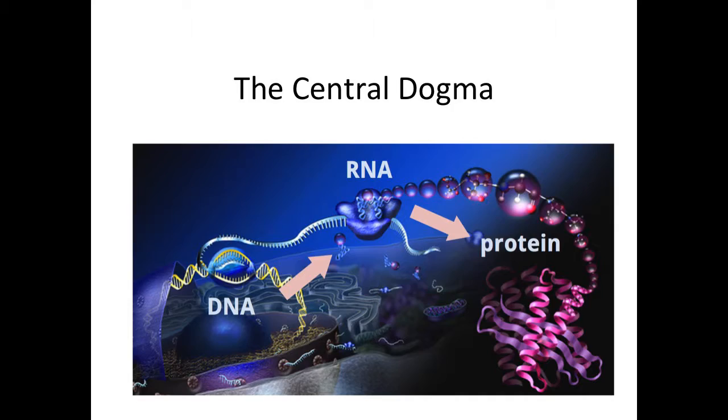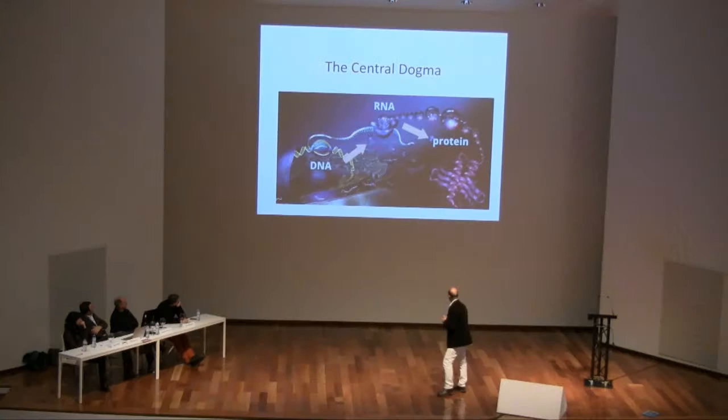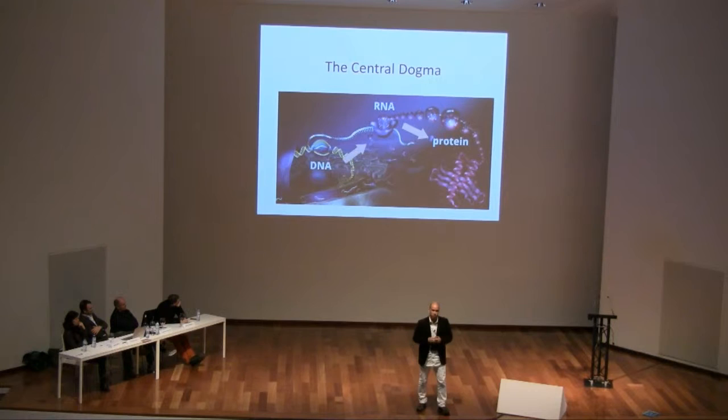The reason it's called a dogma is because it was proposed where there was very little evidence for it, and that may or may not have changed, as we'll see. The model is about 50 years old, and it's pretty useful, but it's grown a lot, and it's time for a shave. So DNA produces RNA, which produces protein.